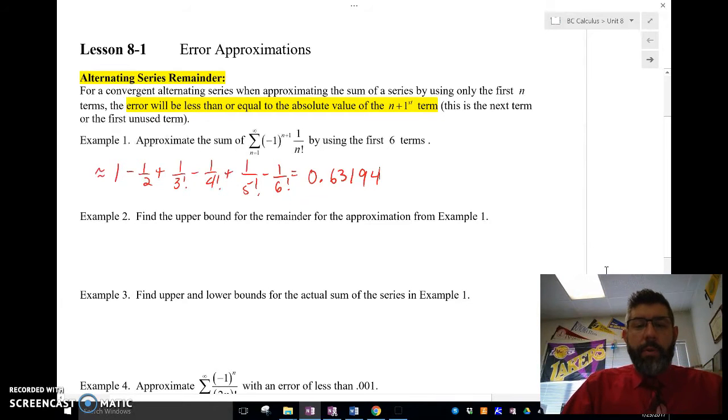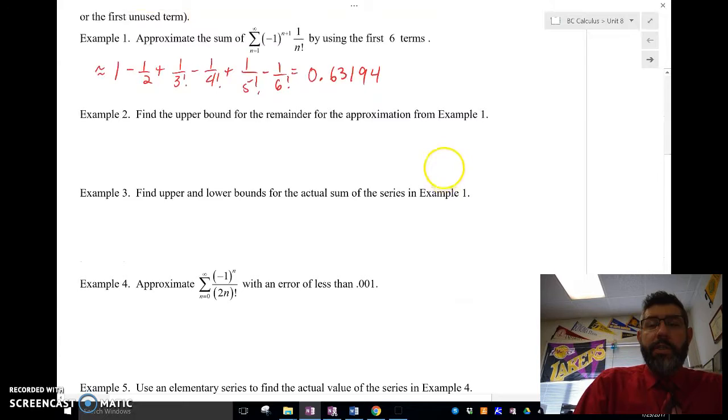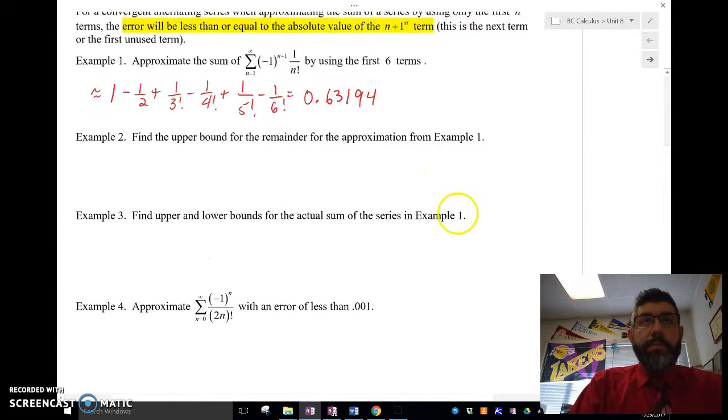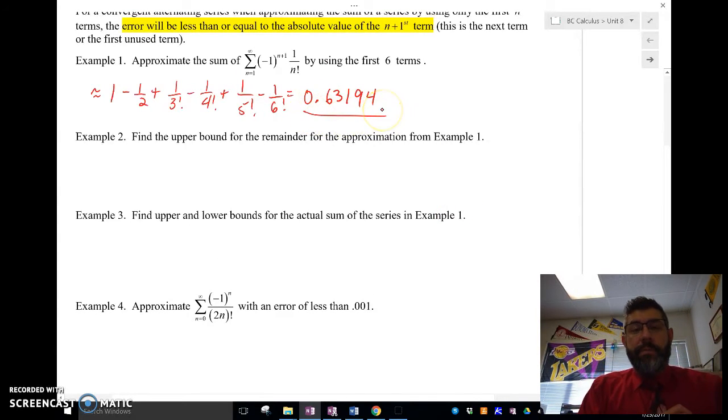Find the upper bound for the remainder for the approximation from example 1. So this is my estimation. Now, I have an amount of error.